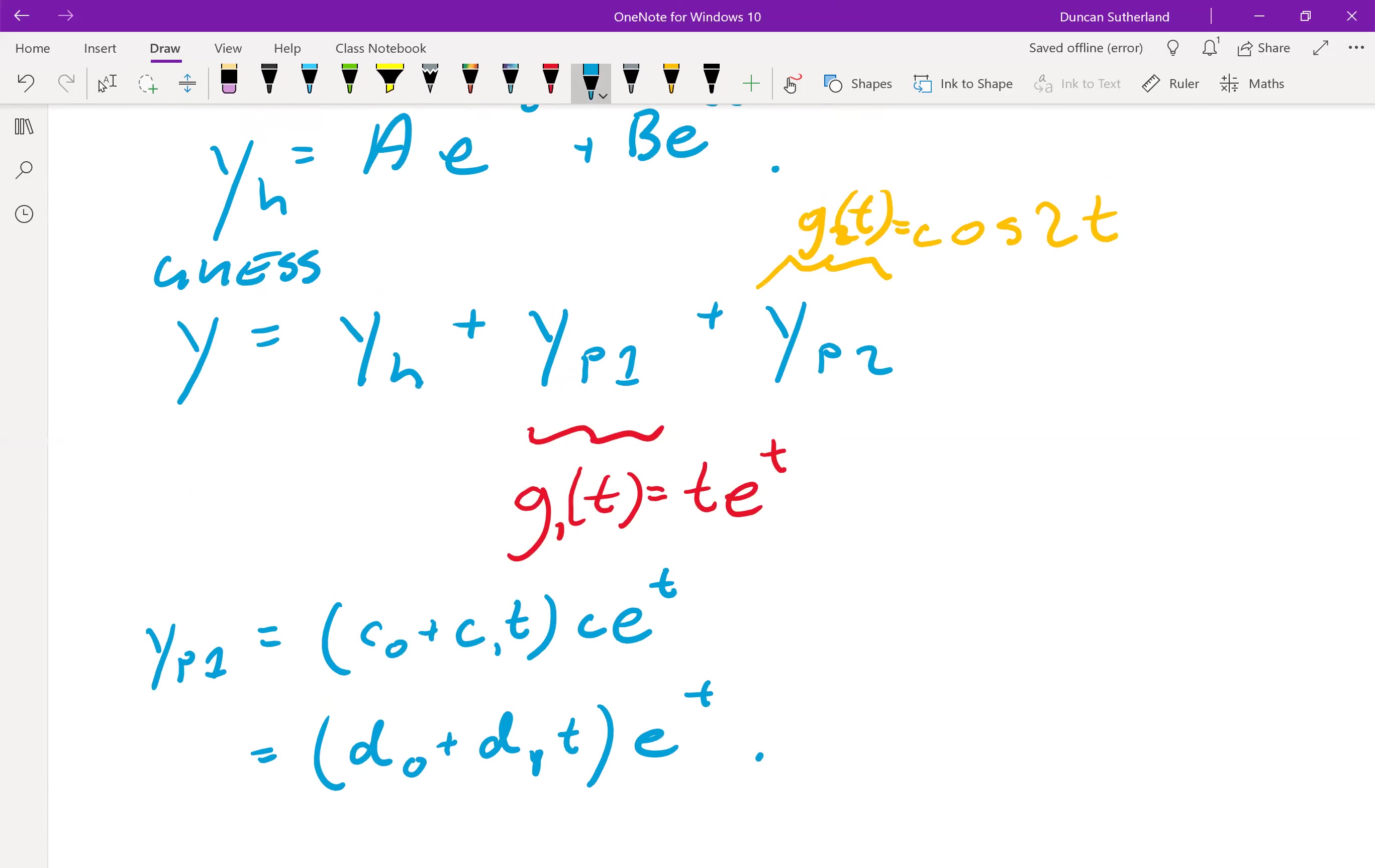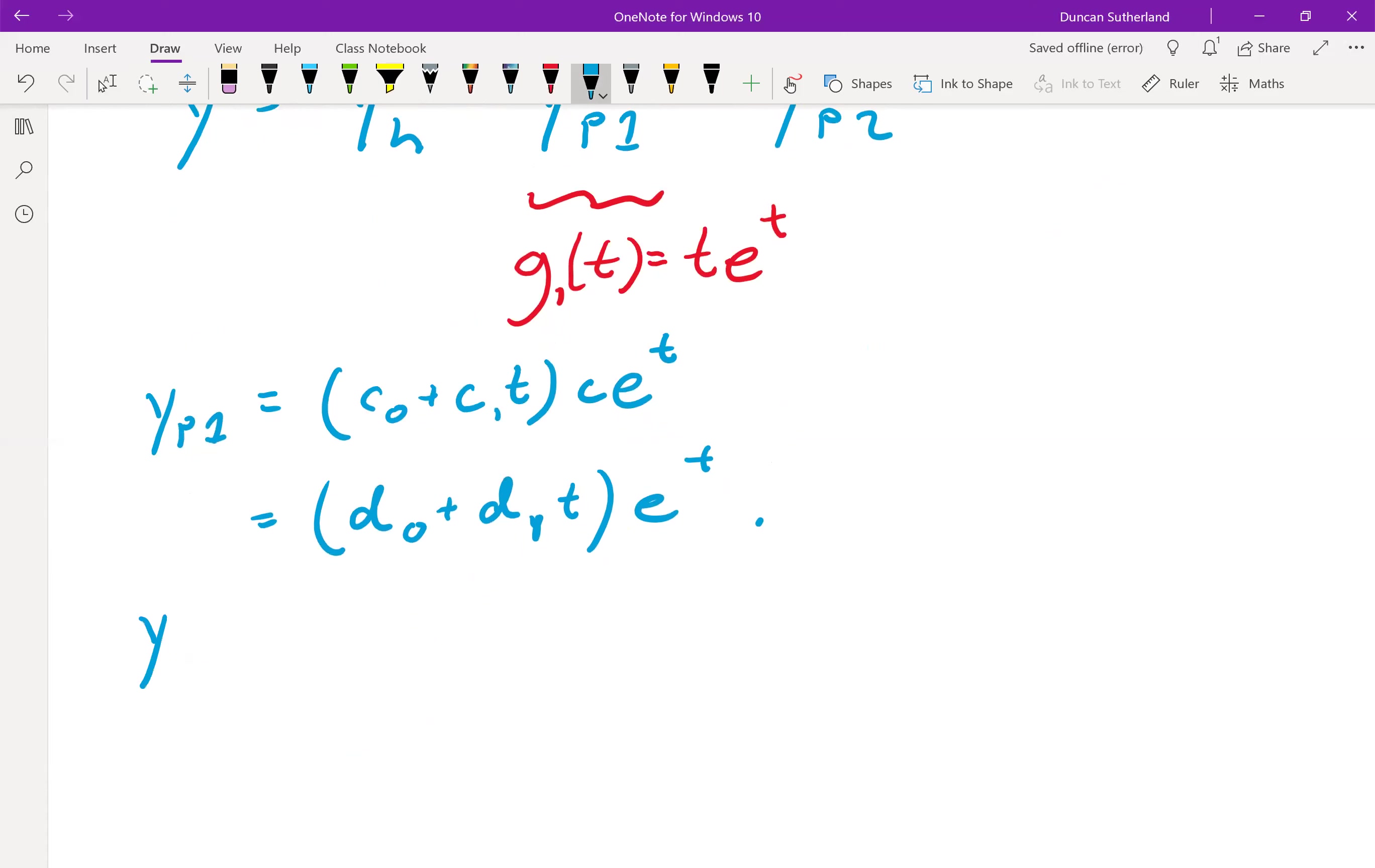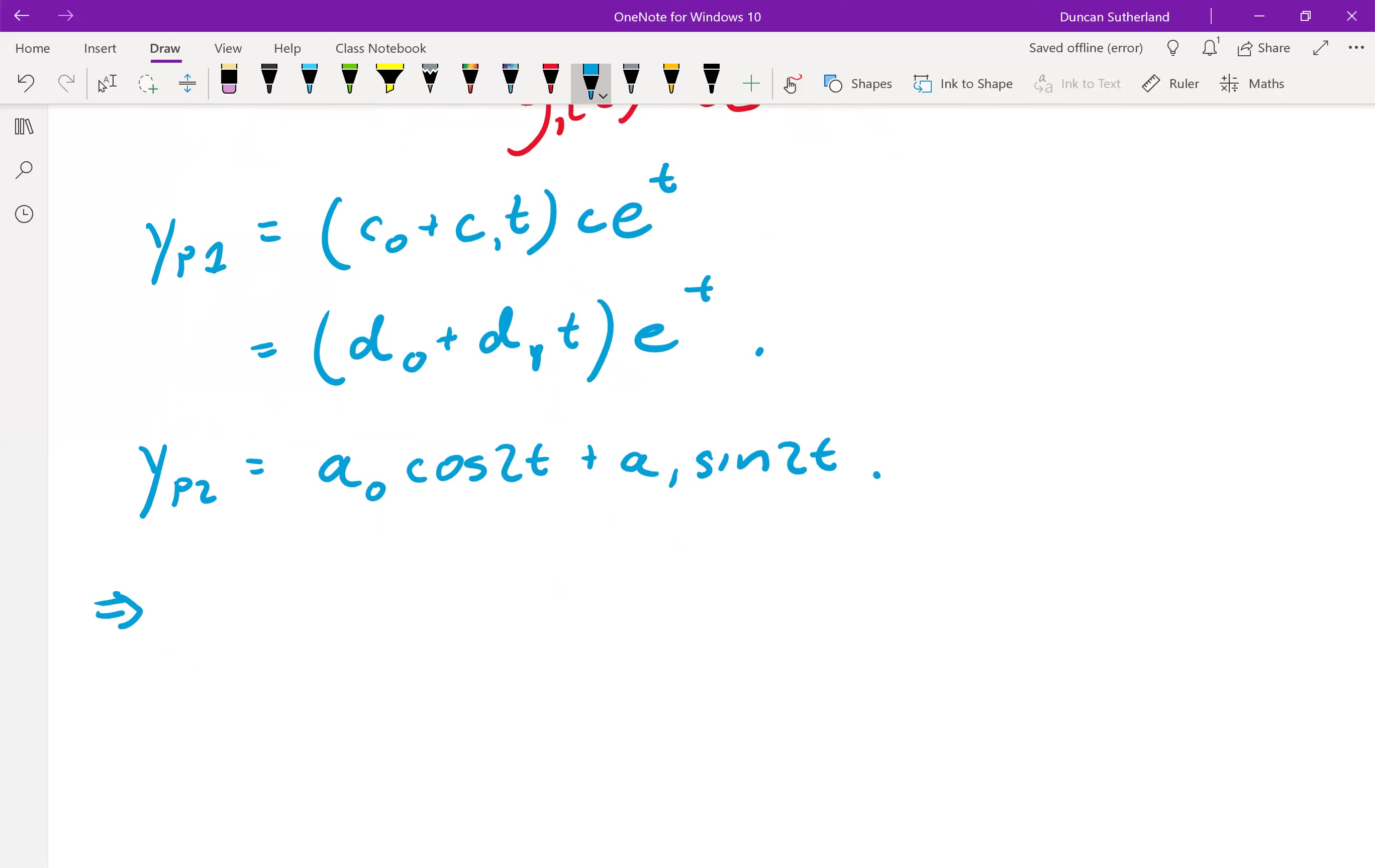So the linear part comes from matching this linear polynomial here. The exponential part comes from matching the exponential. Now we've got to match cos 2t. So when we match cos 2t, we've got a different constant. Let's call it a0 cos 2t. And then we've got a sine. So we've got the sine bit like so associated with a1.